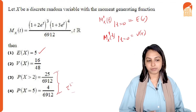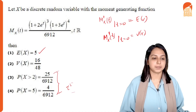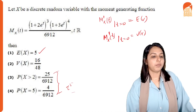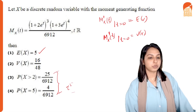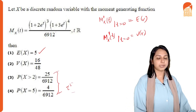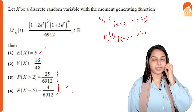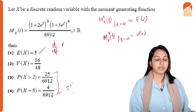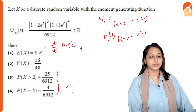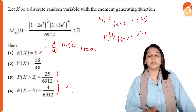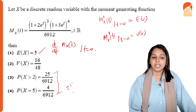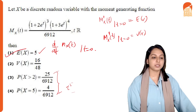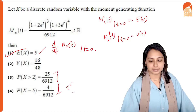Computing d/dt of M_x(t) and substituting t = 0, we get E[X] = 5. Therefore option 1 is the right answer.